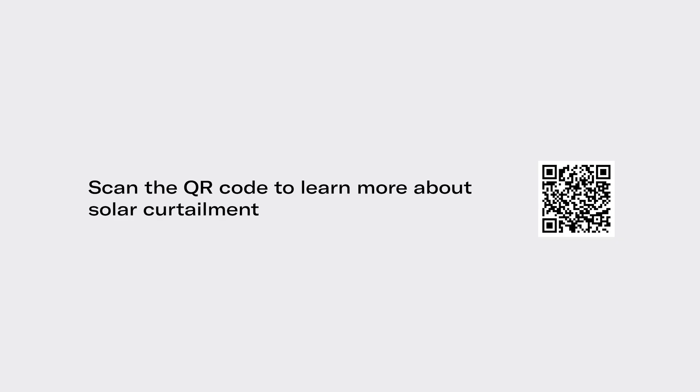You might also see that there's an error with solar curtailment, which should pop up clearly in the Devices section. If you see that, we've got a few troubleshooting steps we can recommend, and you can find details on our website as well.